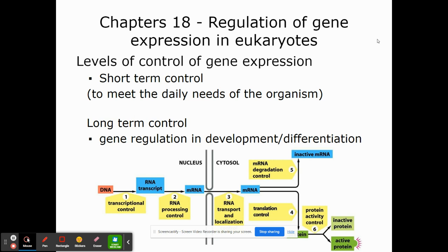Long-term control occurs as a cell begins to specialize — going from a stem cell, which can become almost any cell, to become something specialized like a lens cell in your eye, a liver cell, a bone cell, or a tooth cell. In long-term control, we'll see different genes permanently turned off in those specializing cells, whereas in stem cells, none of those genes would really be turned off. Short-term control is how we regulate or turn on genes necessary for the daily requirements of that particular cell.